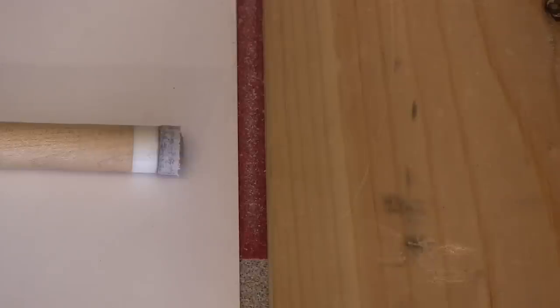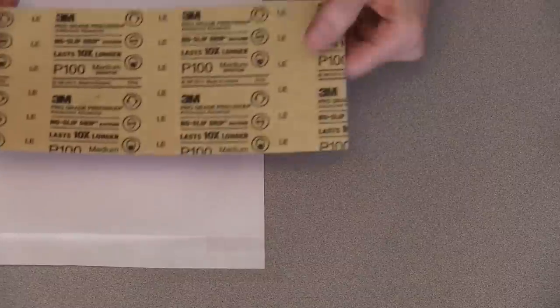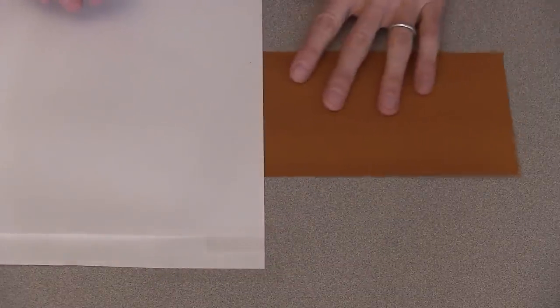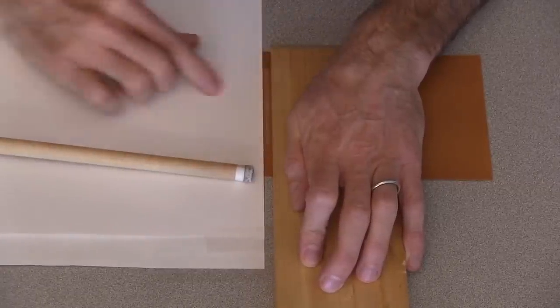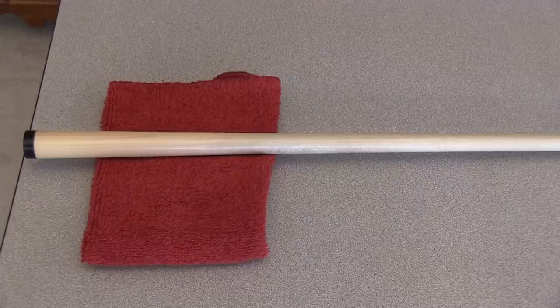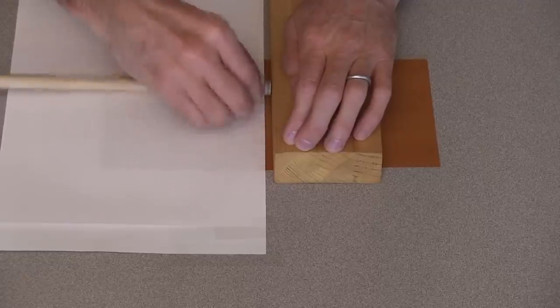Move to a different part of the sandpaper and blow and wipe the debris away periodically. After the tip gets close to the final diameter, switch to fine-grained sandpaper and continue.